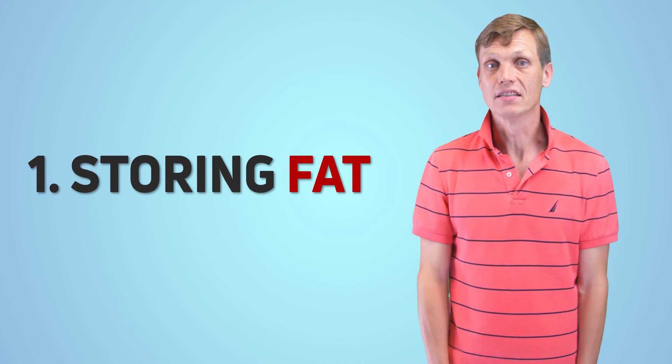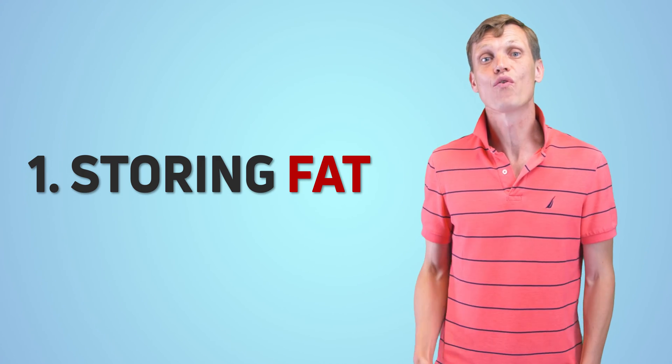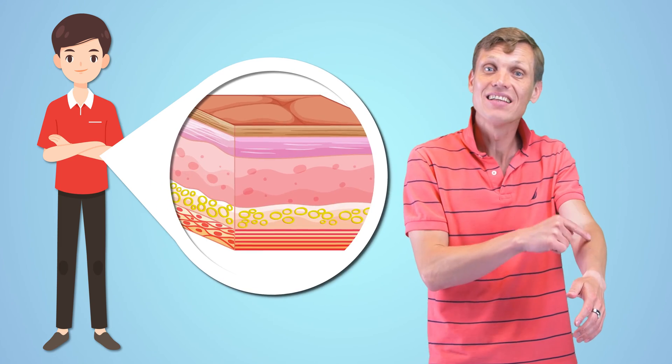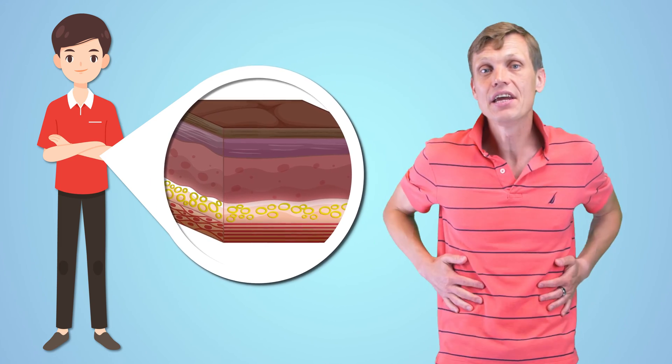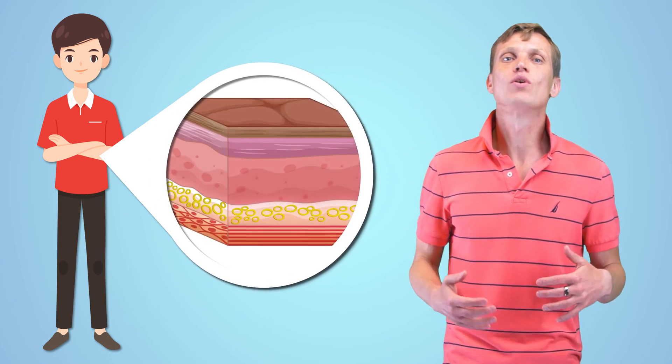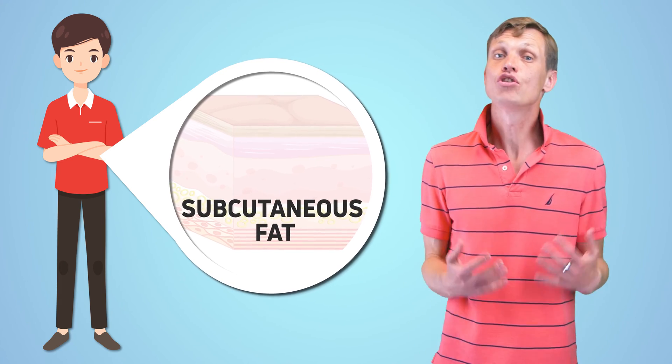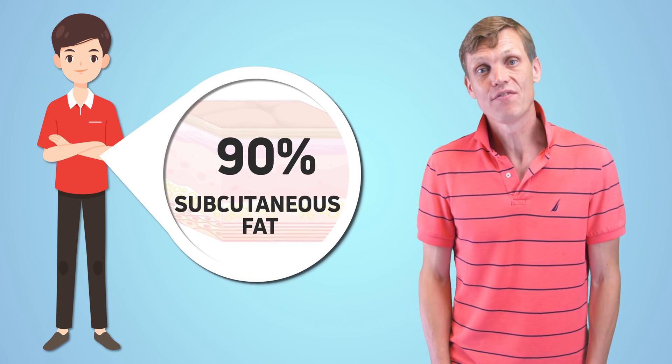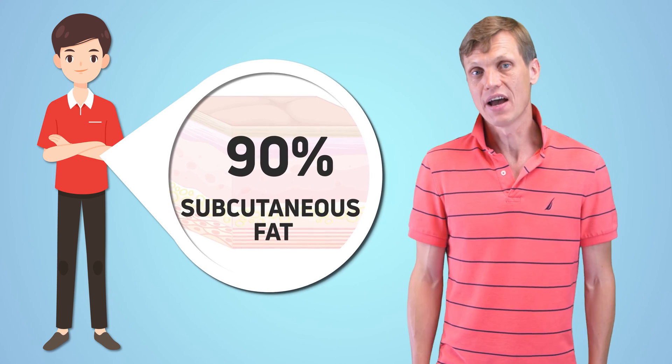First, storing fat. The most convenient place to store fat in our bodies is right under the skin. Here, here, here. This type of fat is called subcutaneous fat. Research showed that on average, about 90% of the fat in our body is subcutaneous fat.